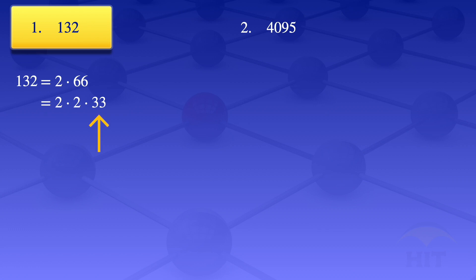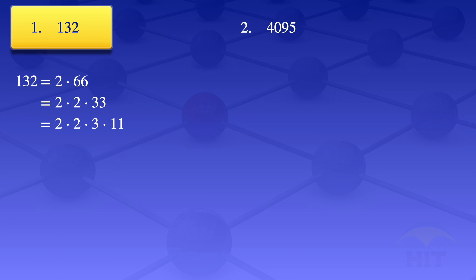Now we look at the 33. Starting with the smallest prime number, 2 is not a factor of 33. We look at 3 — 3 is a factor. 33 divided by 3 gives us 11, so our expression is now 2 times 2 times 3 times 11. Since 11 is a prime number, we can rewrite this as 2 squared times 3 times 11.